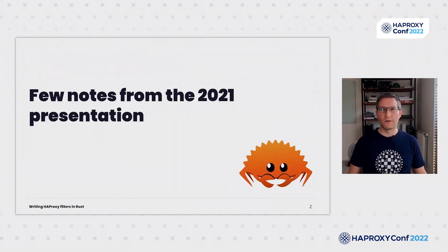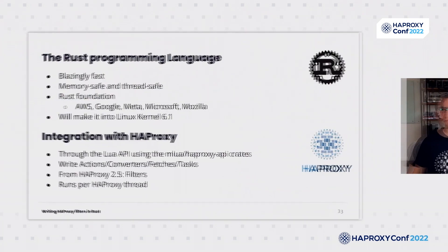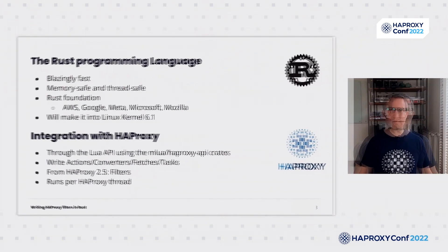Before we start, let's go back to last year's presentation. Rust is a multi-paradigm general purpose programming language that emphasizes performance, type safety, and concurrency. Rust enforces memory safety, which means that all references point to valid memory, without requiring a garbage collector or reference counting as present in other memory-safe languages. To simultaneously enforce memory safety and prevent concurrent data races, Rust uses the concept of ownership and borrowing, and tracks the object lifetime and variable scope of all references in a program during compilation.